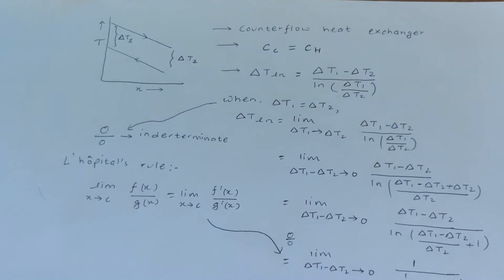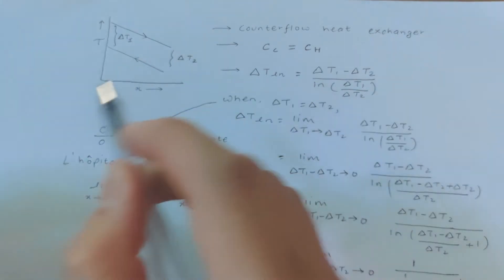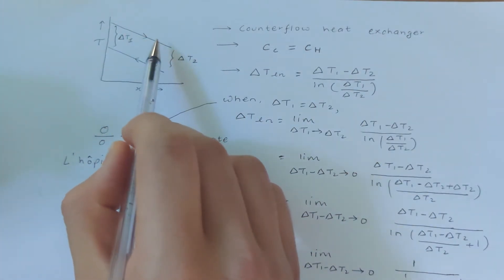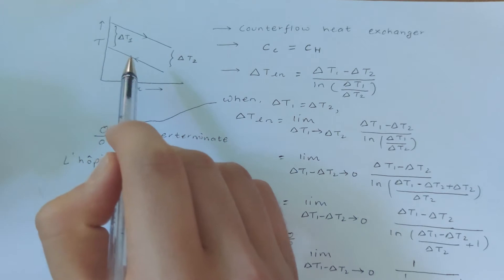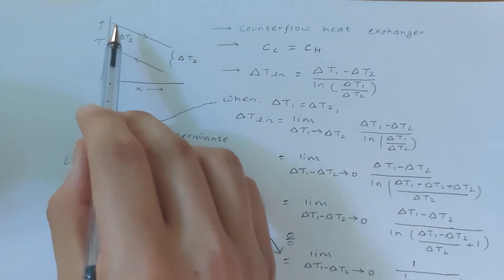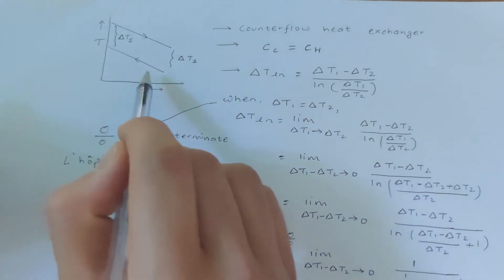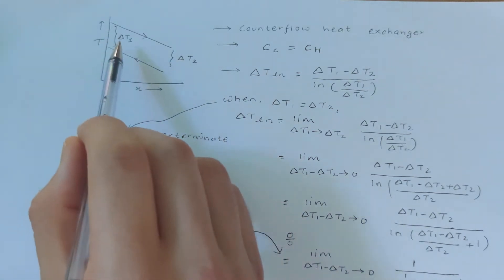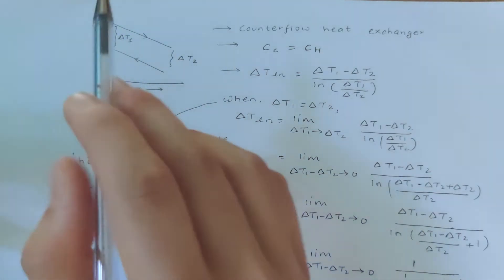In this video I'm going to talk about a special condition in a counter-flow heat exchanger. In a counter-flow heat exchanger we have two fluids: the upper one is the hot fluid and the lower one is the cold fluid. The hot fluid is moving from left to right and the cold fluid is moving from right to left.